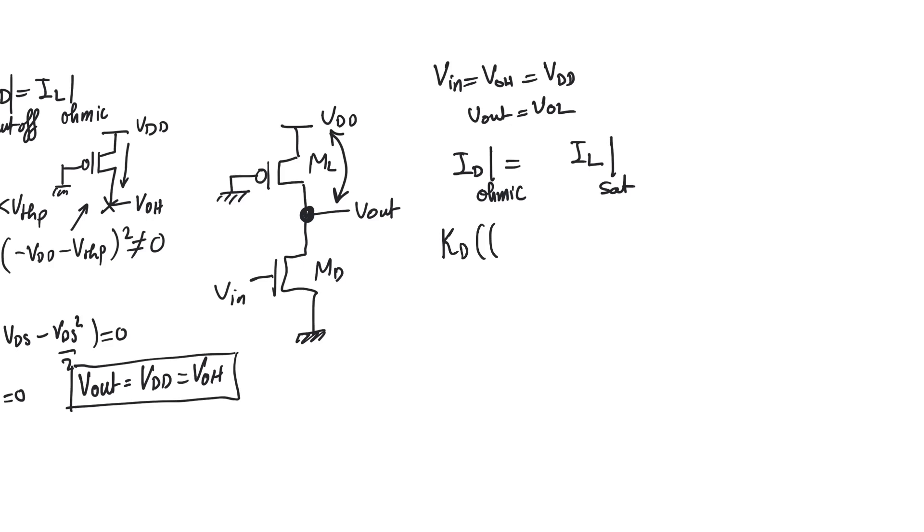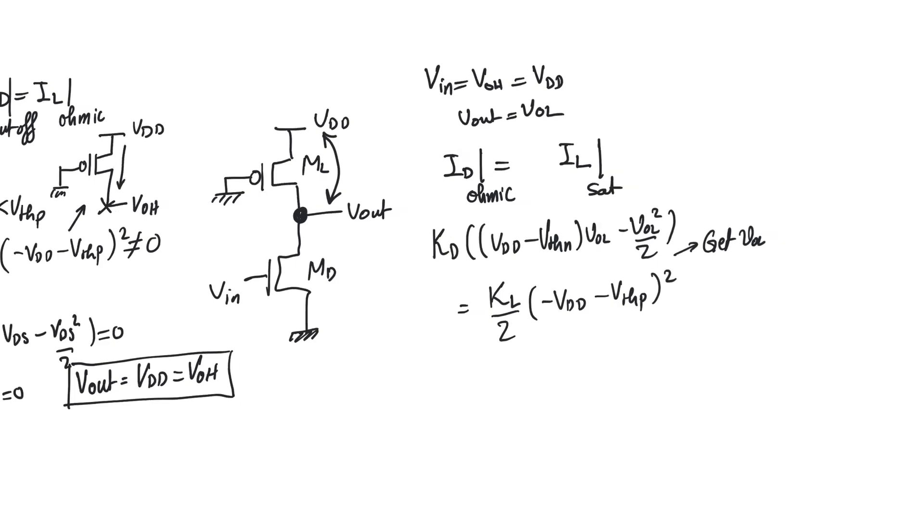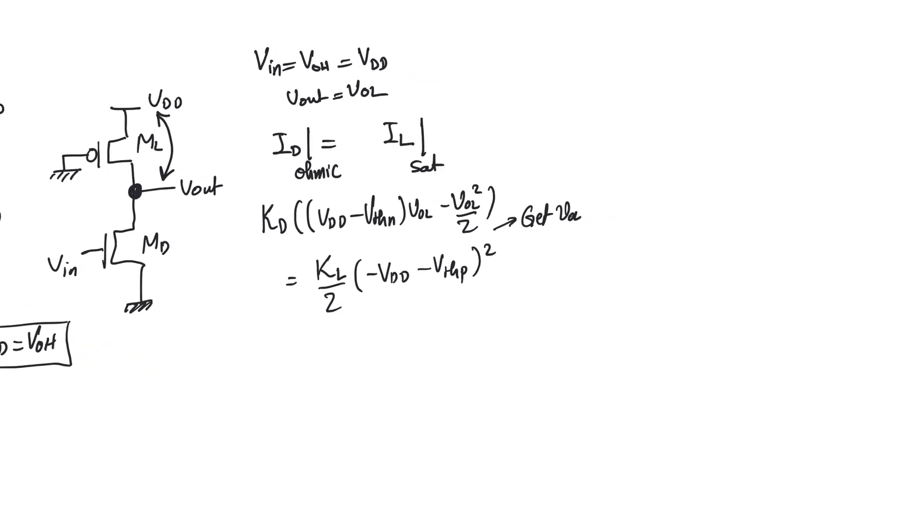If you are not sure about this, you can write the inequality and it will immediately tell you that the PMOS has to be saturated. So we simply write the equations here, the current equations. So for the NMOS, it's KD into VDD minus V threshold and V output low minus V output low square over 2 equal to the saturation current of the PMOS KL over 2 into minus VDD minus V threshold P all square. So it's a quadratic equation in V output low. We saw this quadratic equation with the RTL, enhancement load, and depletion mode families. And we are seeing it here again. So we will solve for V output low. We will get two values for V output low because this is a quadratic equation. And one of them will be acceptable. The other will not be acceptable because it will either lie beyond the boundaries of ground and supply, or it will not cause the driver to be ohmic and the load to be saturated.